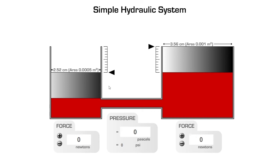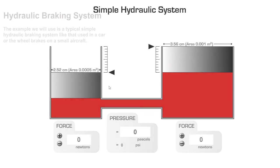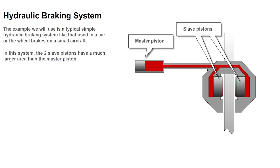So let's look at how hydraulic principles can be put into use. The example we will use is a typical simple hydraulic braking system, like that used in the car or the wheel brakes on a small aircraft. In this system, the two slave pistons have a much larger area than the master piston.